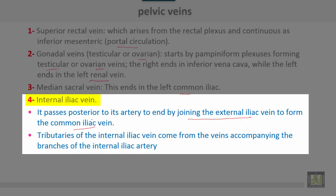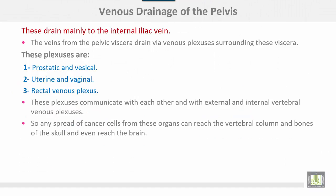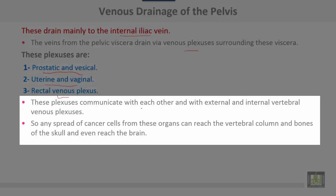The tributaries of the internal iliac vein come from veins accompanying the branches of the internal iliac artery. Venous drainage of the pelvis mainly drains to the internal iliac vein. The veins from the pelvic viscera drain via venous plexuses surrounding these viscera. These plexuses include the prostatic and vesical plexus, uterine and vaginal plexus, and rectal venous plexus. These plexuses communicate with each other and with the external and internal vertebral venous plexus, meaning that malignant cells from these organs can reach the vertebral column and potentially spread to the skull and brain.